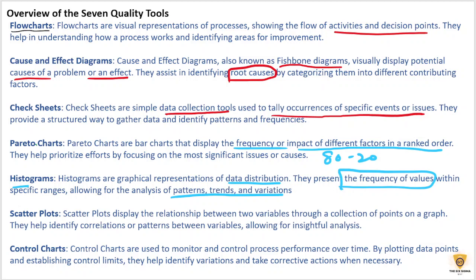Scatter plots display the relationship between two variables, x and y — I will cover an example on this slide. Control charts are used to monitor and control process performance over time by plotting data points and establishing control limits. Control limits are x-bar plus 3s and x-bar minus 3s, where x-bar is the mean and s represents the standard deviation of the data set.